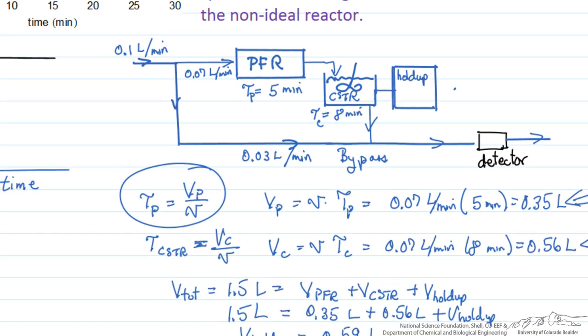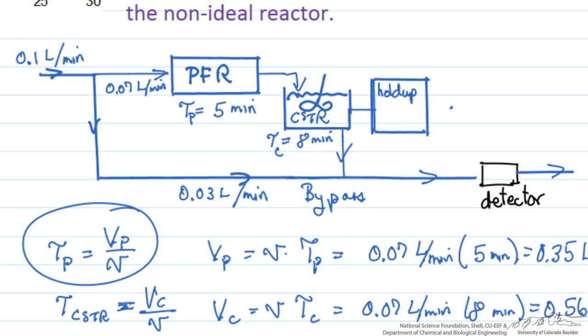So if we have a pulse input, what's going to happen is if we put a pulse here, we immediately see 30% of the pulse appearing at the detector bypass.